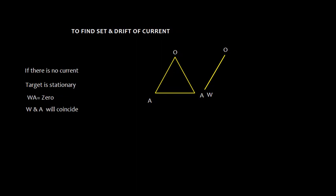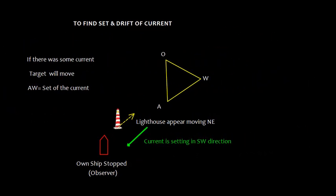We can also find the set and drift of current. If there is no current and the target is stationary, WA would be zero — W and A coincide. If there is some current, the target will appear to move. In that case, AW gives the set of the current. For example, if own ship is stopped near a lighthouse and current sets southwest, the lighthouse will appear to move northeast. So instead of WA, we take AW as the set of the current.